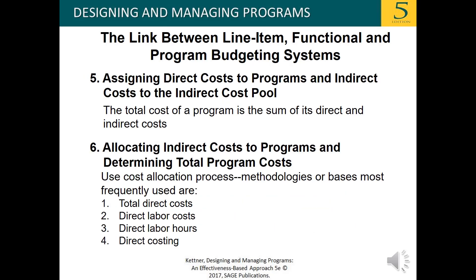Indirect costs are items of expense proposed to be incurred for two or more programs — overhead costs, organizational maintenance costs, and all operating expenses that benefit two or more agency programs. The total cost of a program is the sum of its direct and indirect costs. Methodologies or bases most frequently used for allocating indirect costs are total direct costs, direct labor costs, direct labor hours, and direct costing.